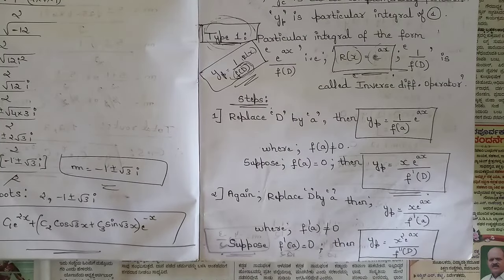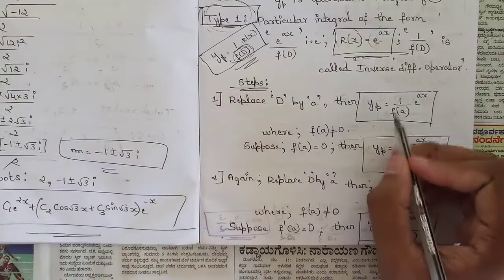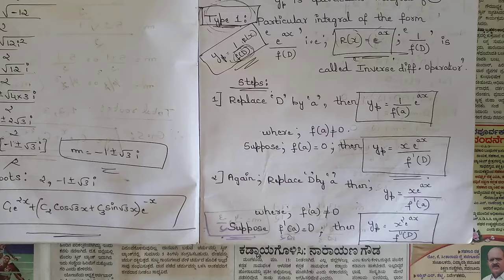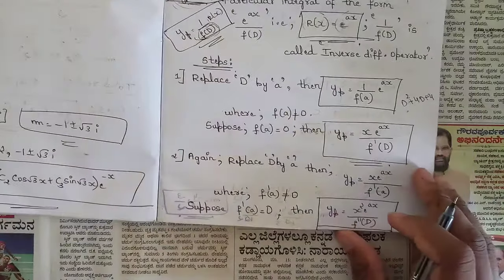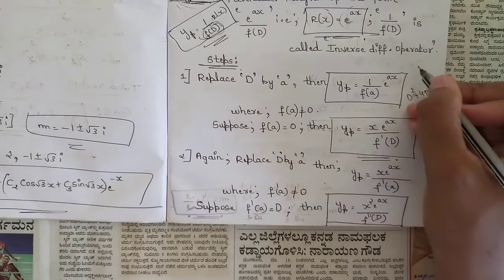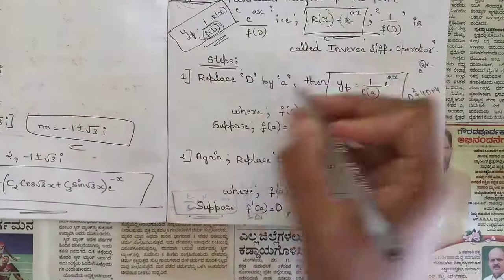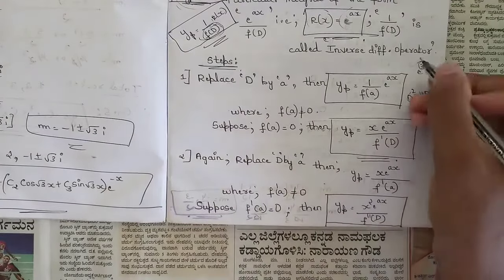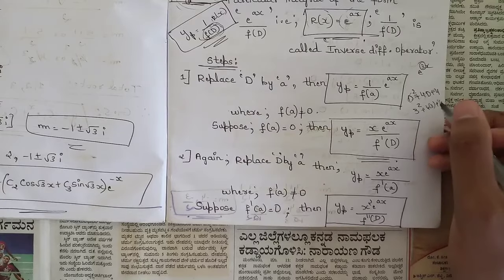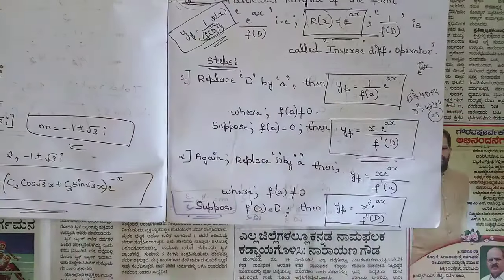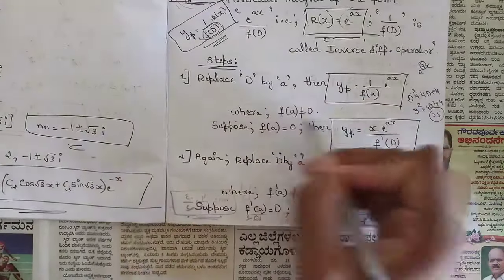Steps to find yp: the first thing we need to do is replace D by a. Then yp = e^(ax) / f(a). For example, if f(D) = D² + 4D + 4 and r(x) = e^(3x), then a = 3. Replacing D by 3 gives: 3² + 4·3 + 4 = 9 + 12 + 4 = 25. So yp = e^(3x)/25. The value f(a) when we solve must not be equal to zero.